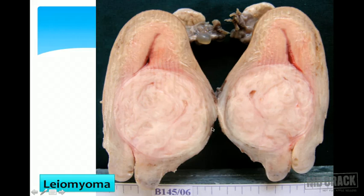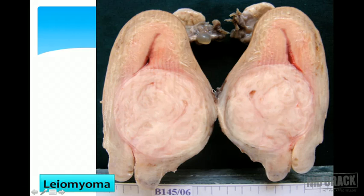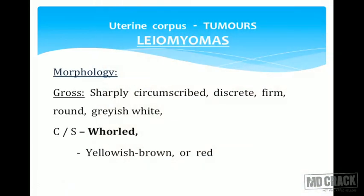The classic gross appearance of a leiomyoma on cut section is described as a whorled appearance — no areas of hemorrhage or necrosis, totally fibrotic, giving a lot of resistance when cutting. If there are multiple leiomyomas, the term leiomyomata is used. Morphologically they are sharply circumscribed, discrete masses, firm to hard in consistency. They appear round and gray-white with a whorled cut section appearance. They can undergo degenerative changes including myxoid degeneration, fibrosis, calcification, and red degeneration (mainly in pregnancy).